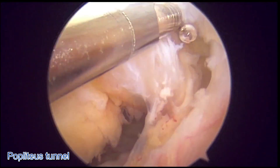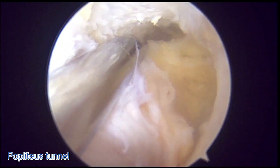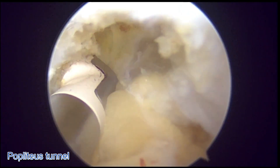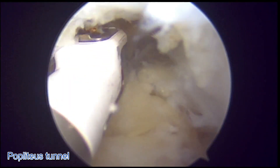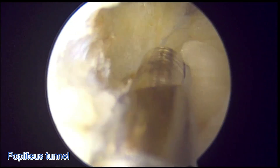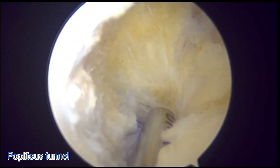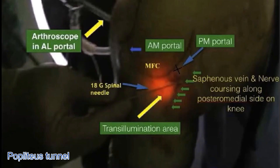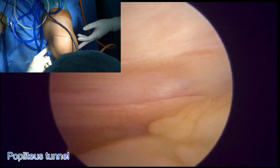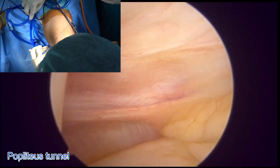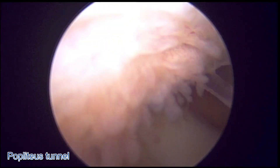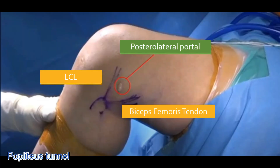We will now gain entry into the posterior compartment using the transseptal technique. A shaver is used to approach the 12 o'clock position in between the cruciate ligaments. Two windows are created in the 7 to 8 o'clock position and the 4 to 5 o'clock position. Using transillumination technique to avoid the saphenous vein and nerve, the posteromedial portal is created. A switching rod is passed from the posteromedial portal to the soft spot between the LCL and the biceps femoris, creating the posterolateral portal.